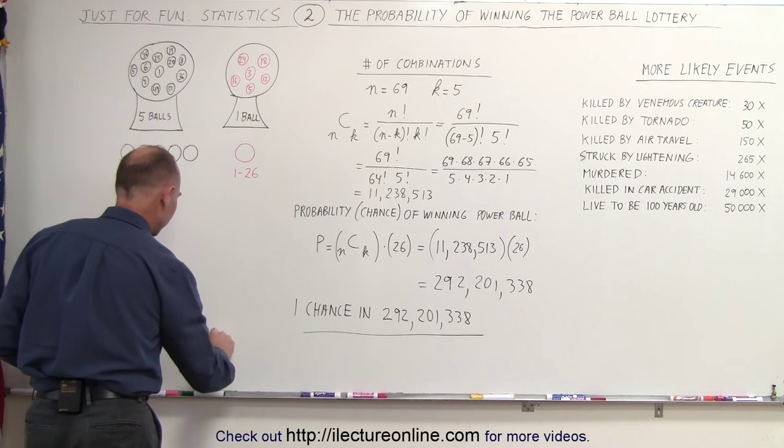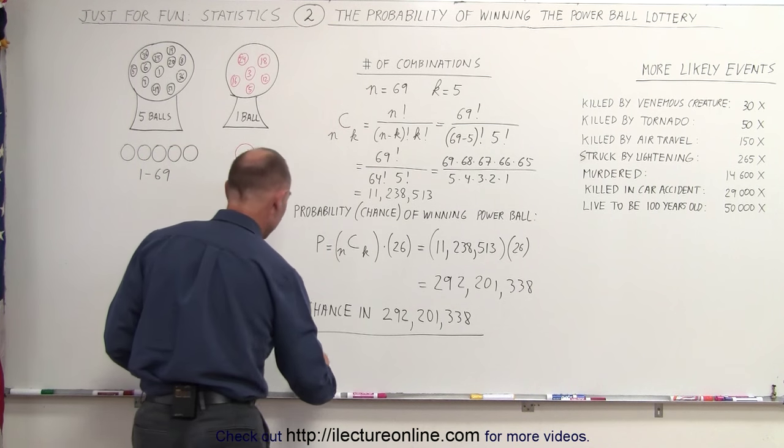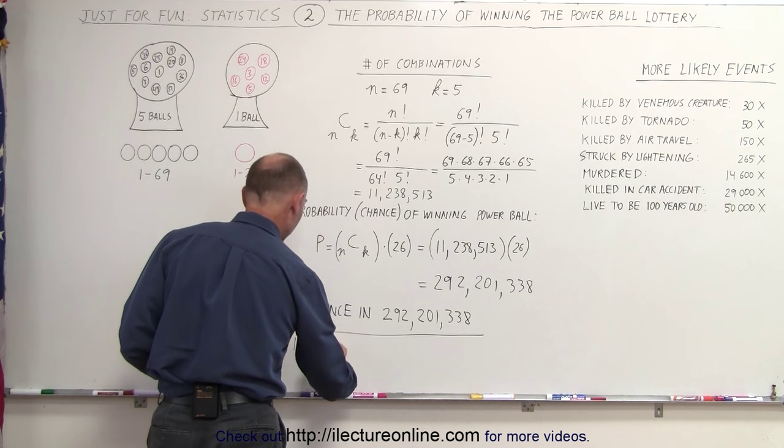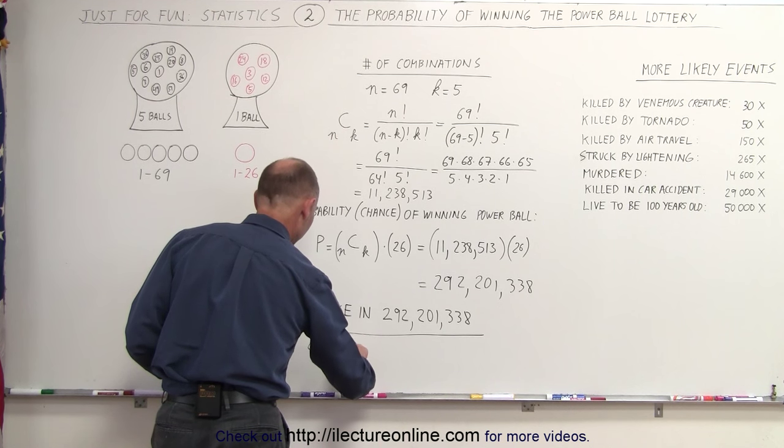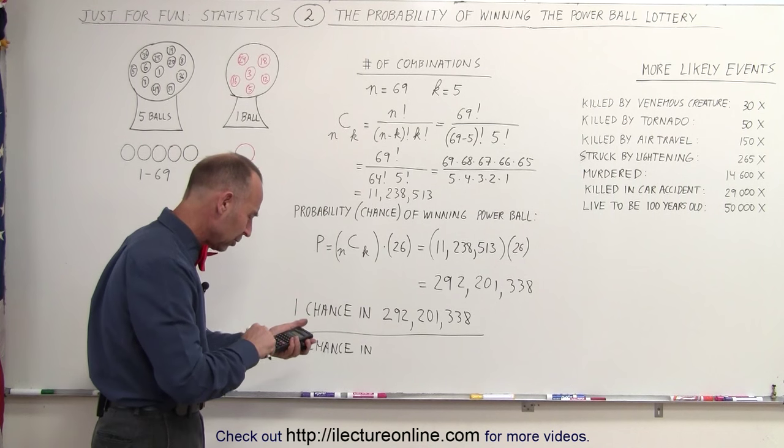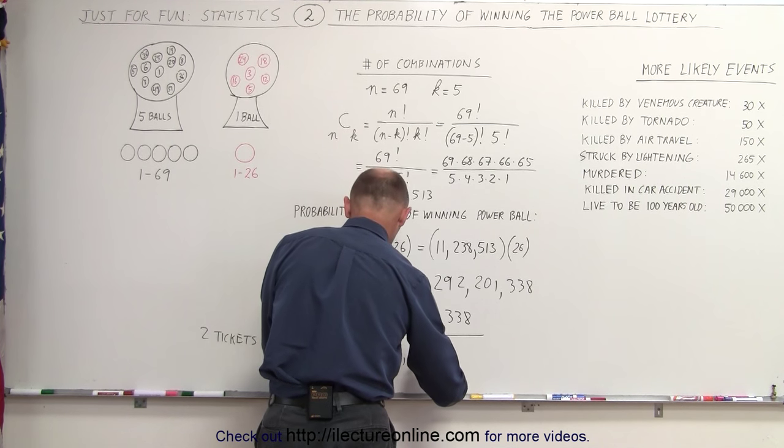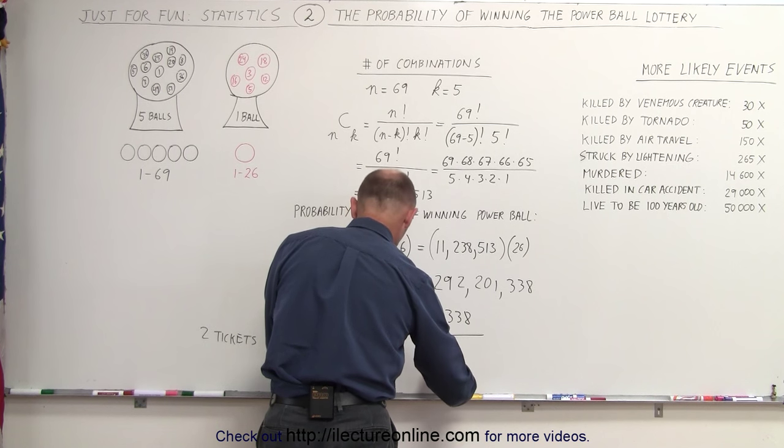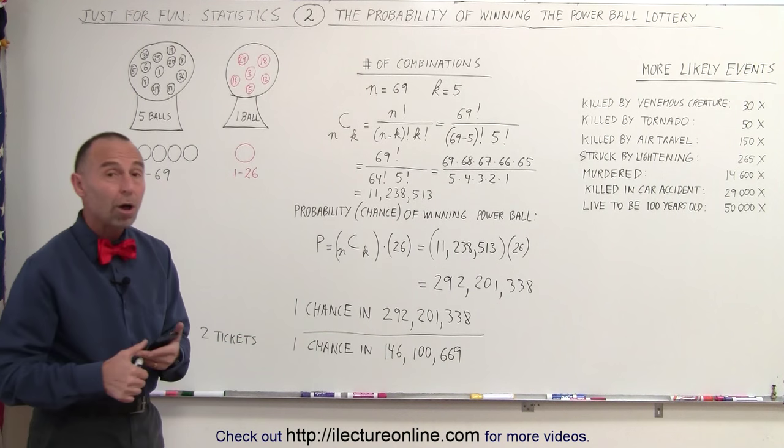So when you buy two tickets, your chances do improve. Now you have one chance in, now we have to divide that number by two, 146,100,669. Still a very small, minuscule chance.